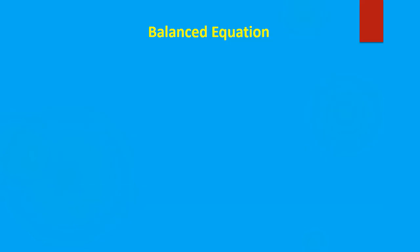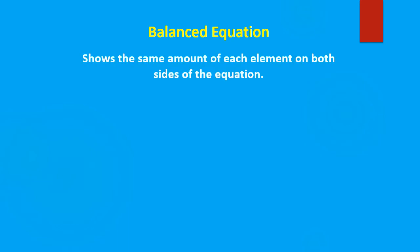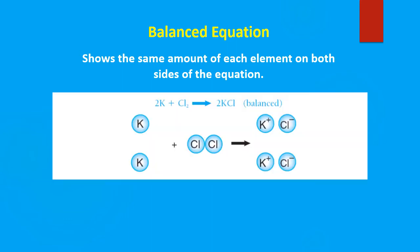So how do we identify a balanced equation? In a balanced equation, we have the same amount of each element on both sides of the equation. So here we see this is balanced, because we have potassium — we have two on the left, and we have one, two on the right. Chlorine — we have one, two on the left, and one, two on the right. So we have equal amounts of potassium on the left and on the right, and equal amounts of chlorine on the left and on the right. So we term this equation as being balanced.